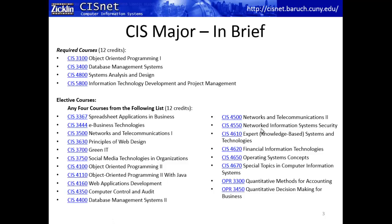So where we left off, we were talking in brief about the CIS major. We talked a little bit about the required courses, which are CIS 3100 Object-Oriented Programming, the Database Management Systems course, CIS 4800 Systems Analysis and Design, and then the Capstone course, CIS 5800 Information Technology Development and Project Management. We also talked about the list of different electives that we can possibly take. What I want to do in this video is talk in more detail about the required courses.